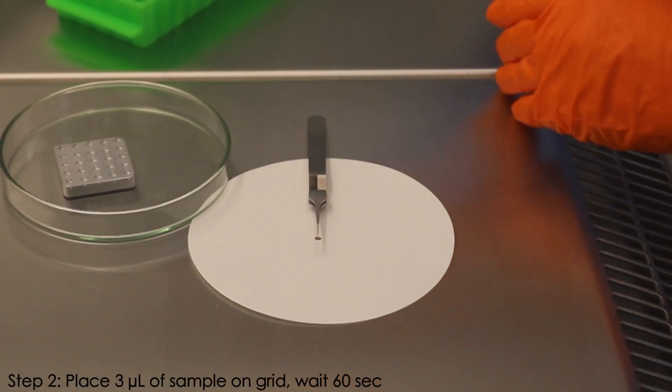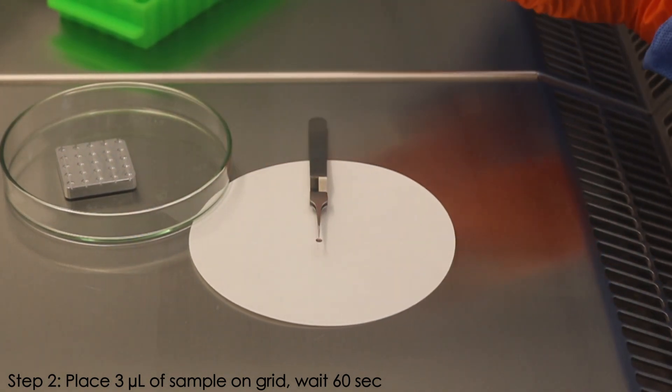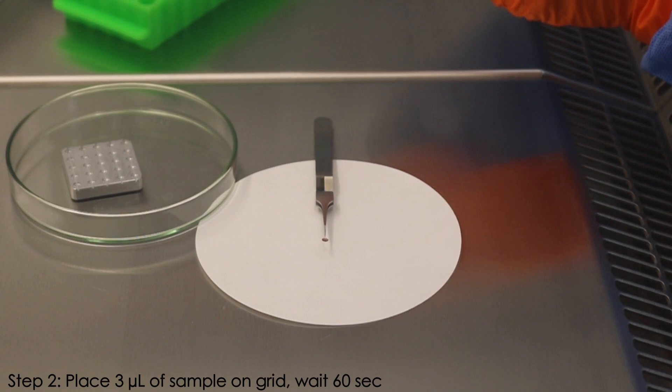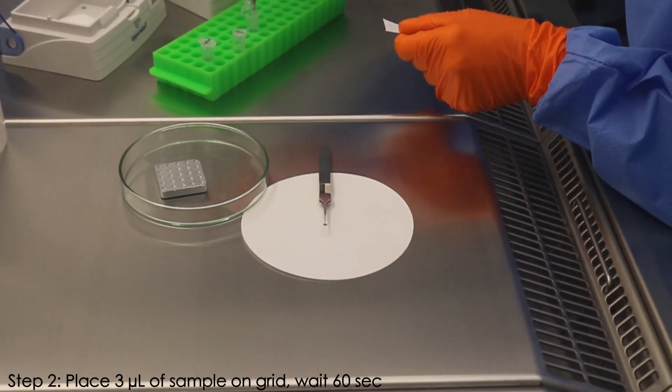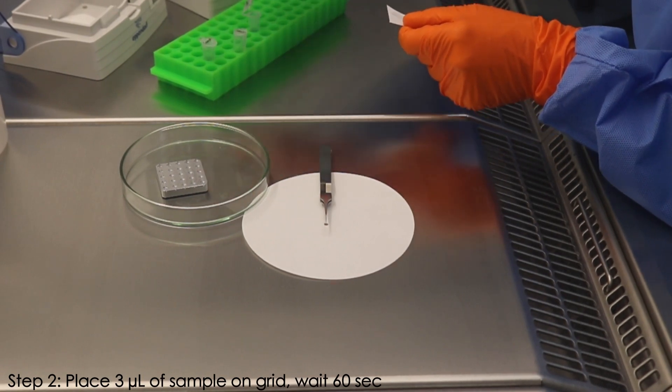Place 3 microliters of the sample on the grid. It is important during this process to keep the grid wet so that it does not dry out, so be prepared to work efficiently.